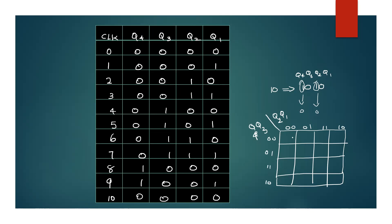After 9 comes the 10th state — at that point you have to reset yourself. States 10 through 15 are invalid in BCD, so the counter must reset itself back to 0000 at state 10. These are don't-care states.